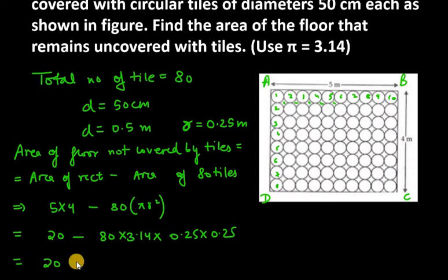So, it is 20. When you multiply this number, you get 15.7. Or, 20 minus 15.7, you get 4.3 meter square. Not centimeter. It is meter square. So, area of floor not covered by tiles is 4.3 meter square.